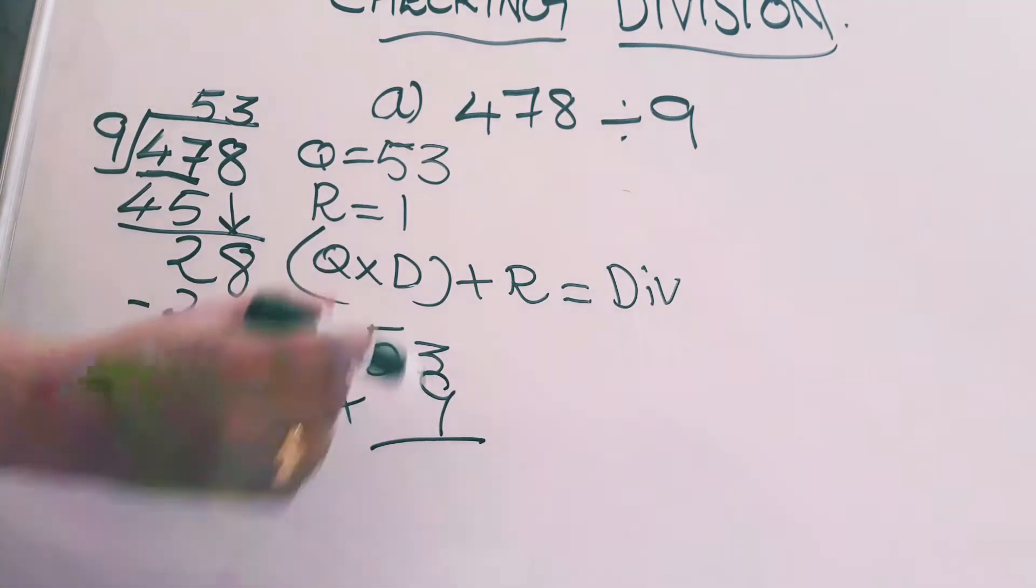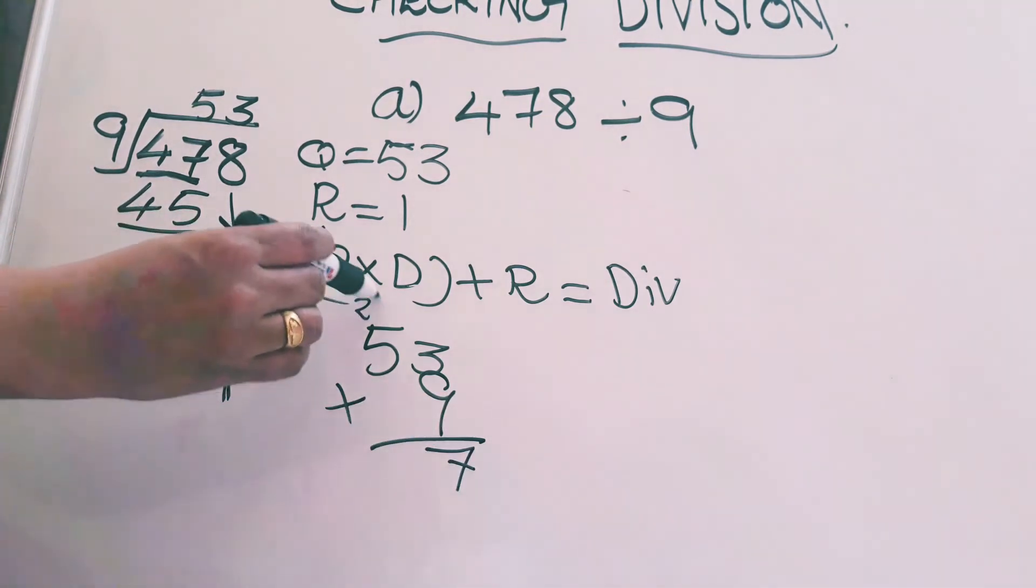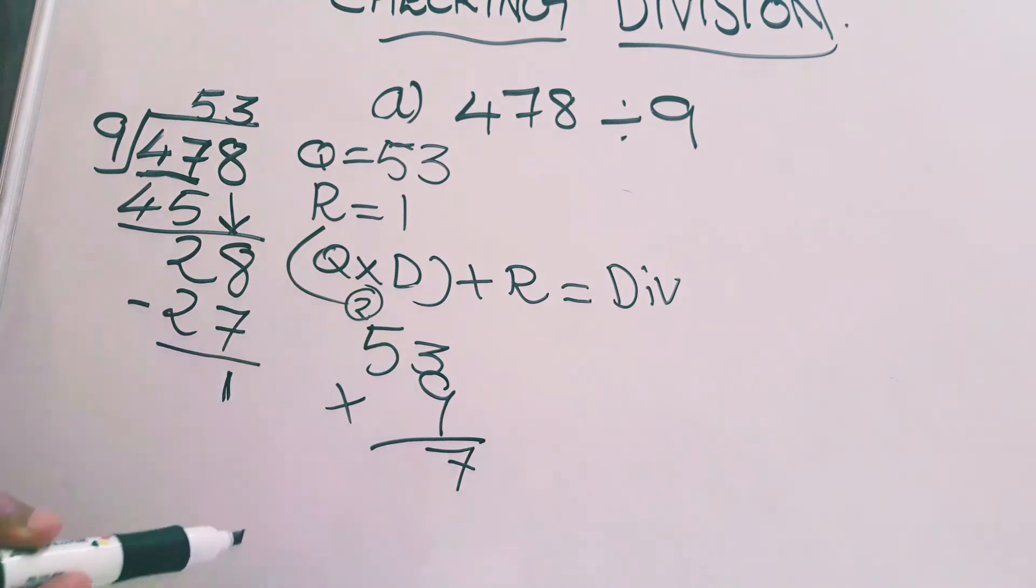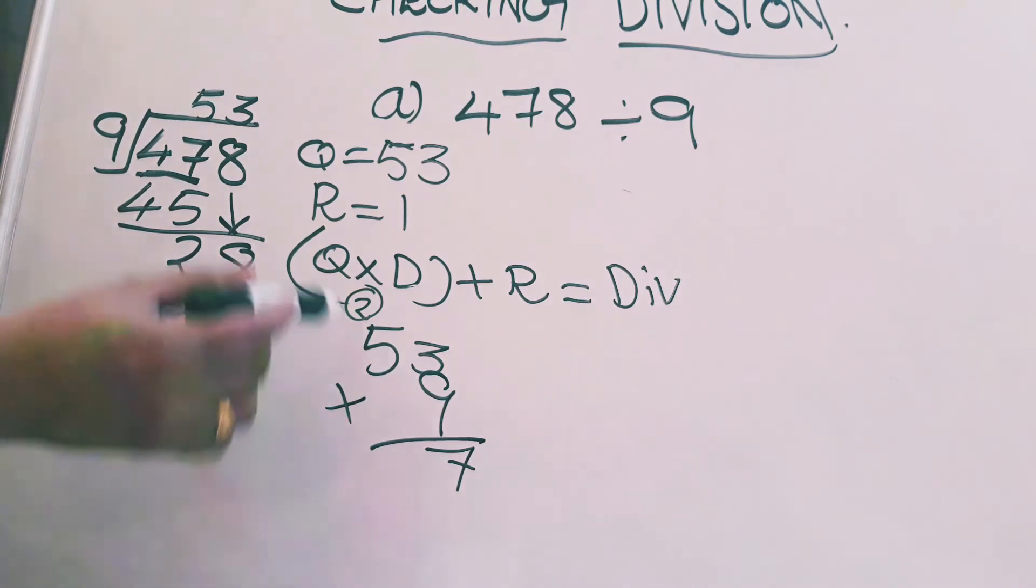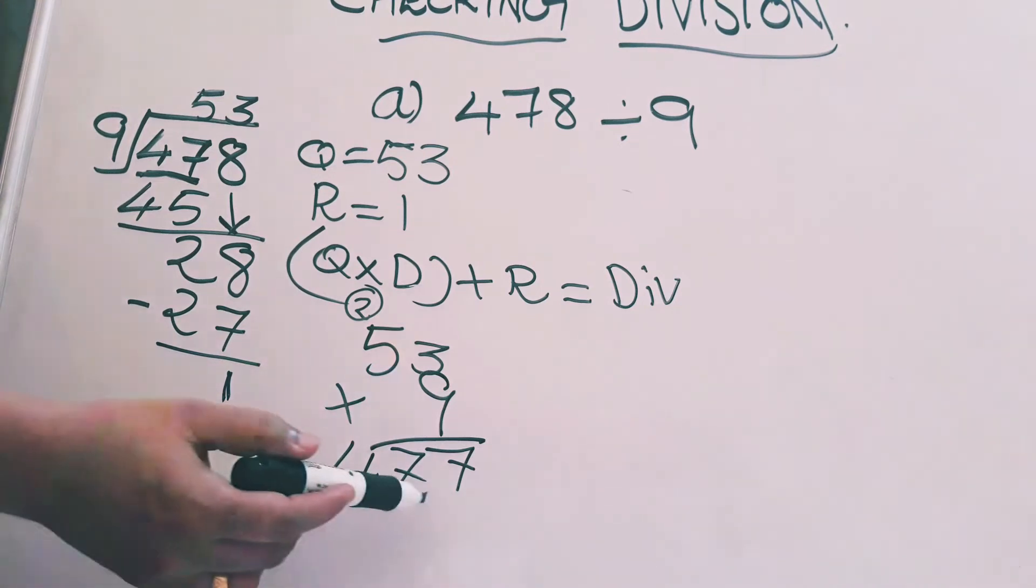Yes, 9 threes are 27. Write 7, carry 2. 9 fives are 45. 45 plus 2 is 47. 477 we got.